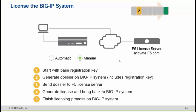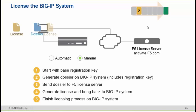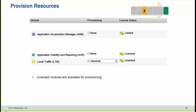For the manual process, you put in the registration key, create a dossier, copy the dossier to the F5 licensing server, it activates, and then you need to manually push the license to update the BIG-IP device. After applying the license, you need to specify whether your BIG-IP appliance is used only for LTM or different modules, and when assigning modules you can assign how much resources you want to provision for each particular module.